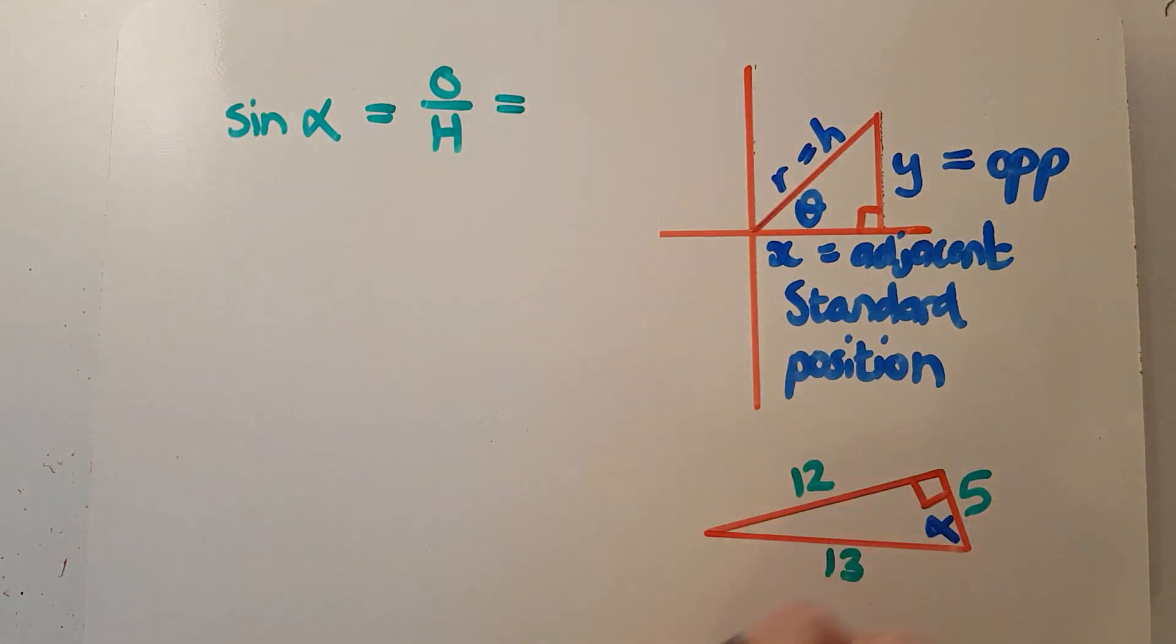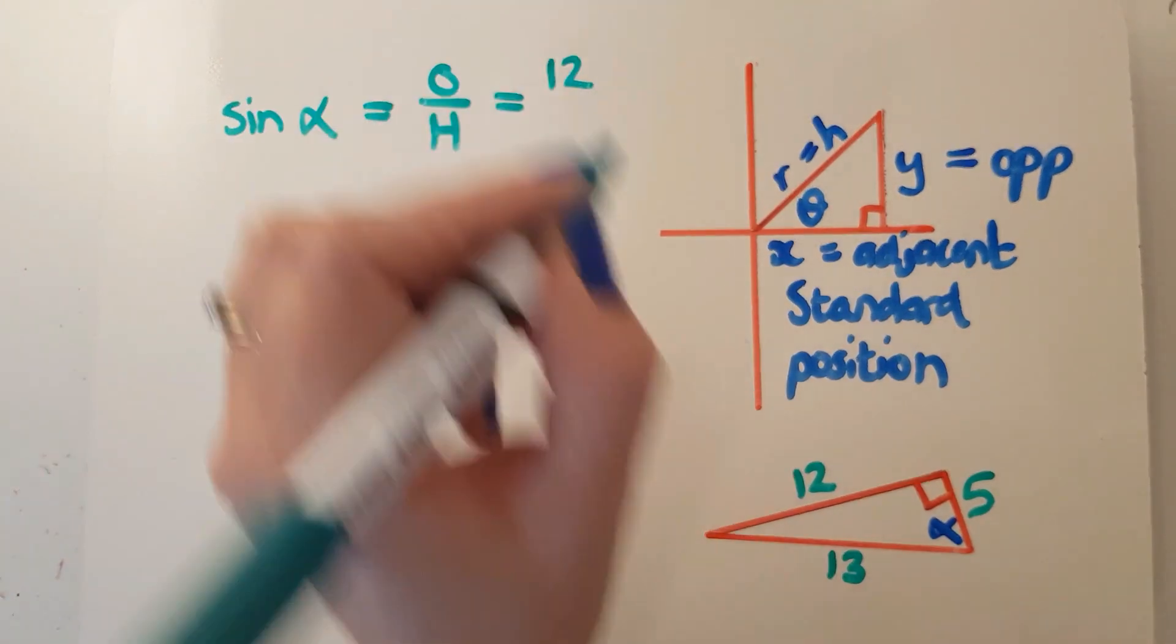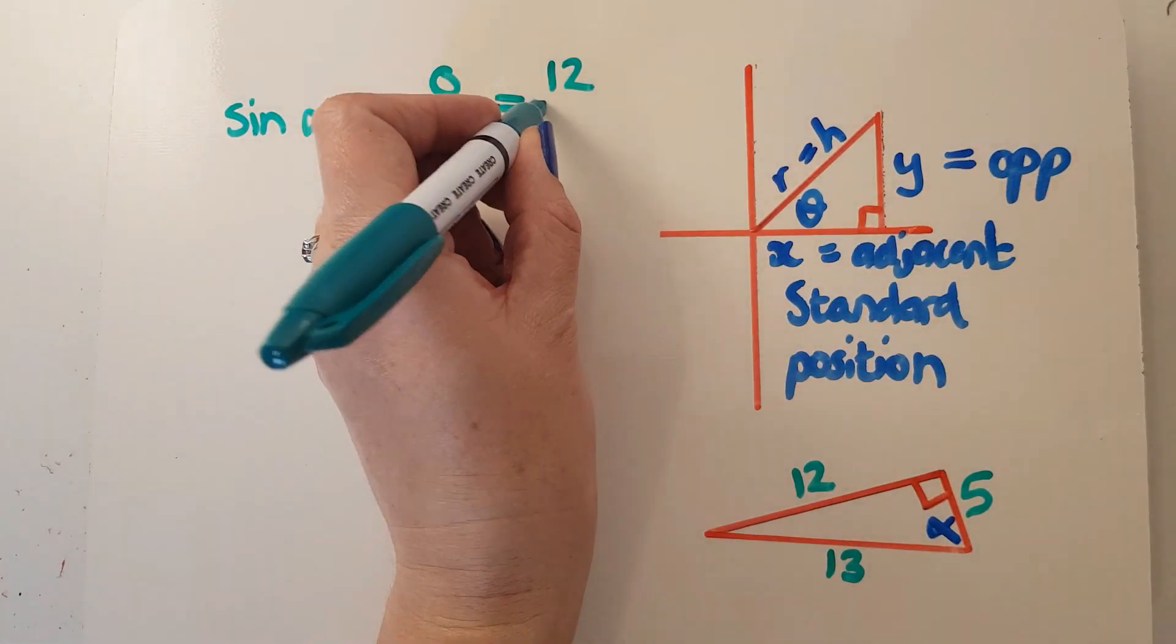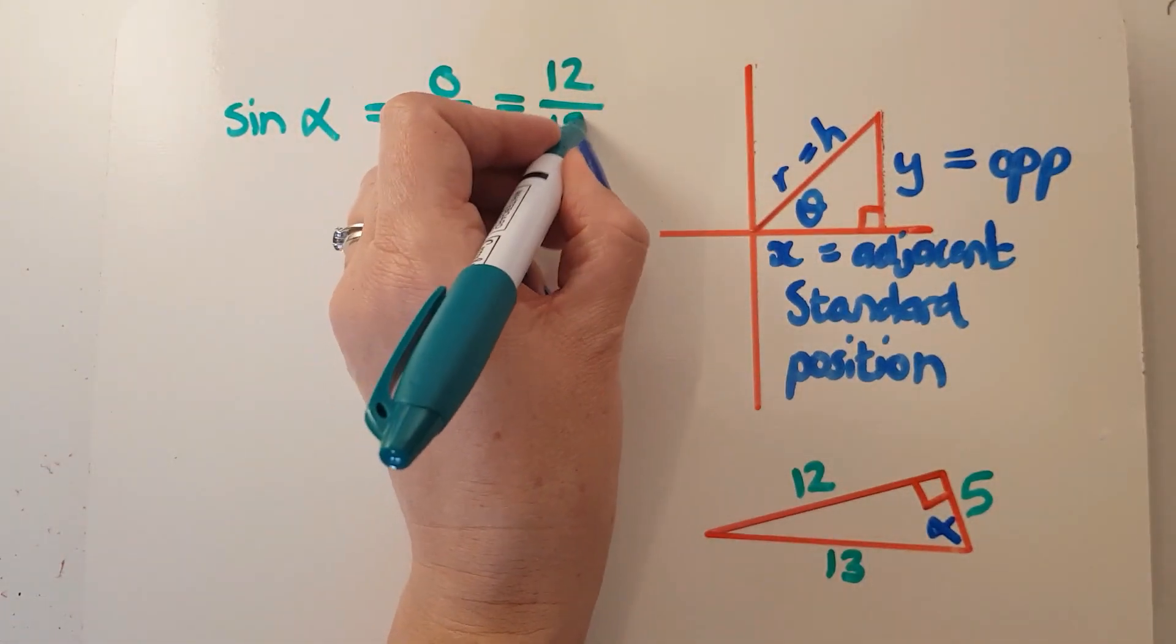So the sin of this alpha here would be opposite, so it's the 12. I'm not putting units in because we really don't use them very often, and they're not relevant. It's 12 over hypotenuse, and thank goodness the hypotenuse is always opposite the 90 degrees, so that's cool. I can get that straight away.